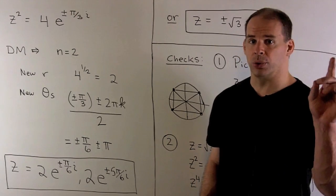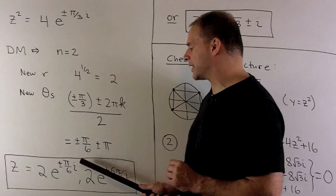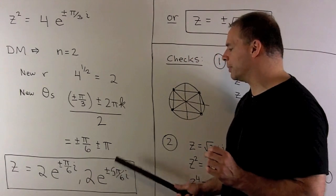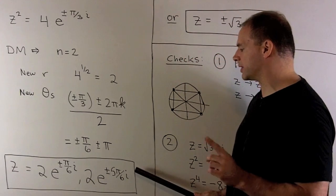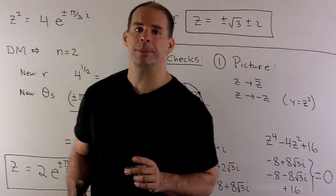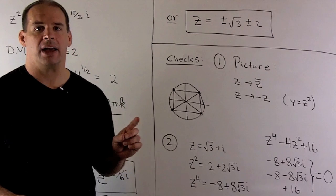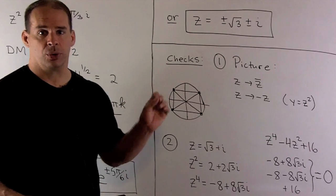In polar form, our solutions are going to be 2 times e to the plus minus pi-six times i, and 2 times e to the plus minus 5 pi-six times i. If we put those in rectangular form, we'll have z equal to plus minus square root of 3 plus minus i. So there we have our four solutions.